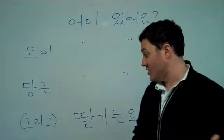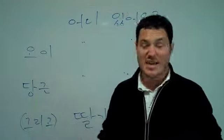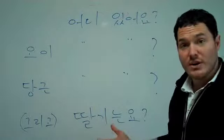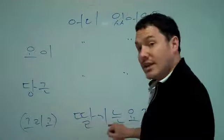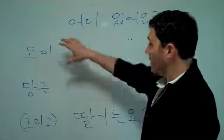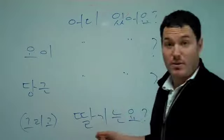And then, using the same conversation strategy as I mentioned before, here I have 그리고, this just means and. 그리고 딸기는요? 딸기. This double D is a bit harder. 딸기는요? So, where are the cucumbers? Where are the carrots? And how about the strawberries?